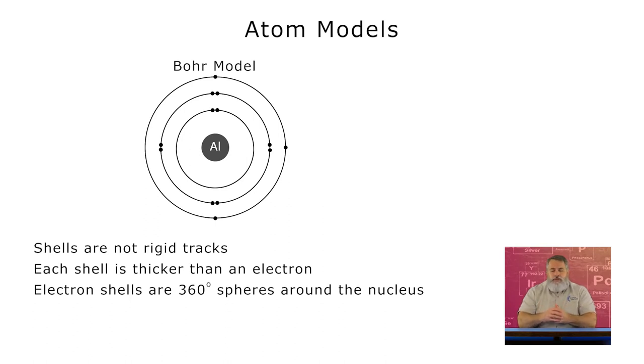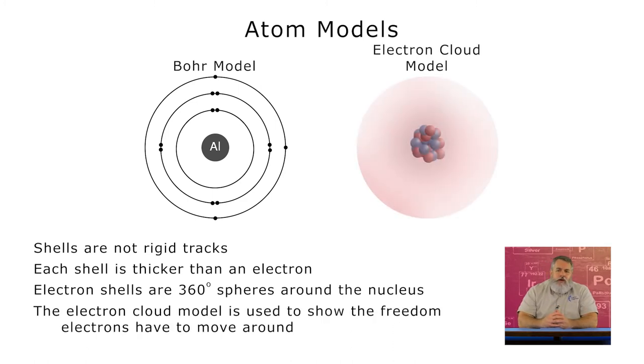Remember, these are three-dimensional structures. To more clearly represent this uncertainty as to where the electrons are at any given point in time, the electron cloud model is used, where the space the electrons occupy is represented not by distinct circles, but by the shaded area around the nucleus. The purpose of the electron cloud model is different than that of the Bohr model, which is why it looks different.